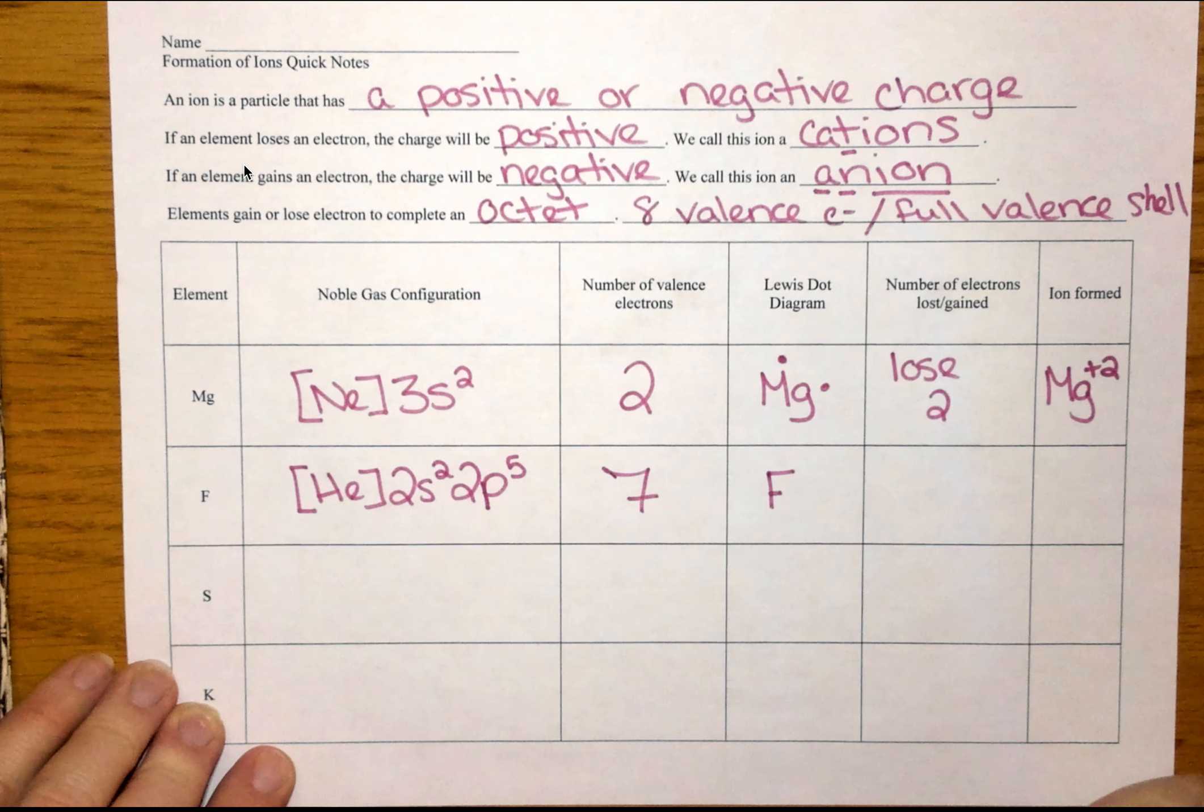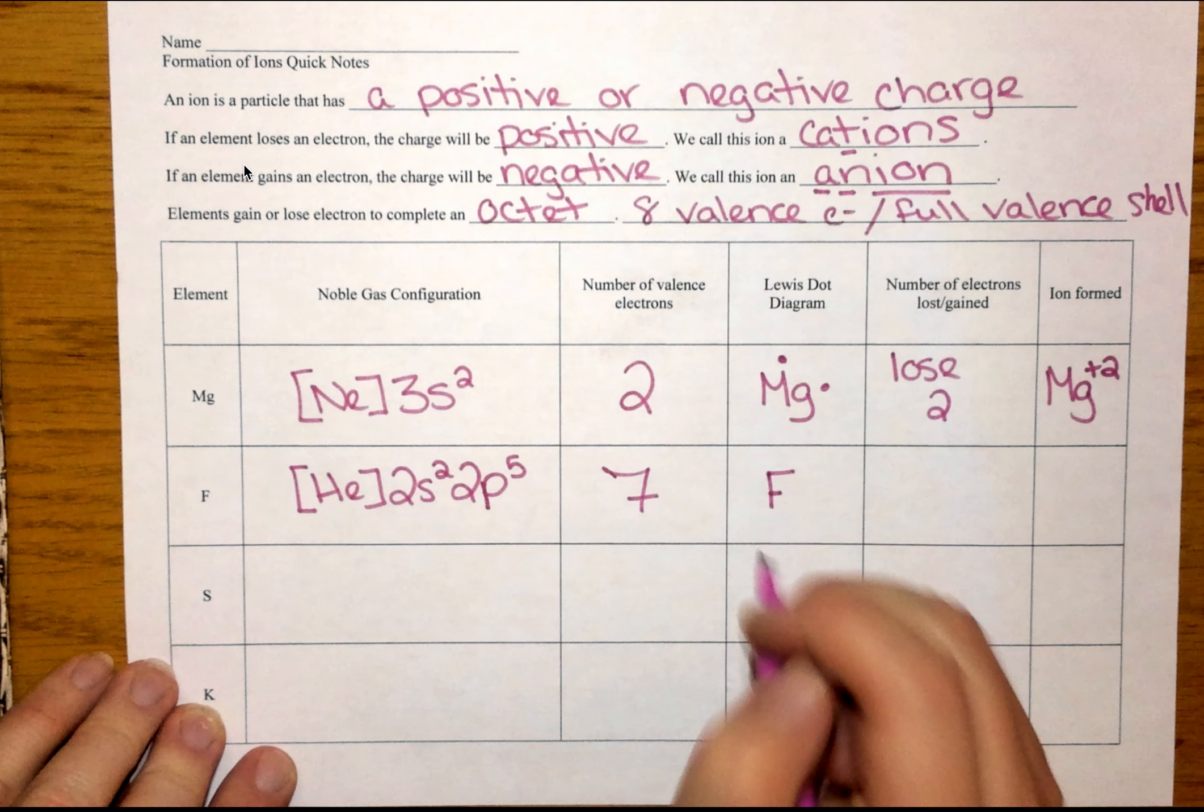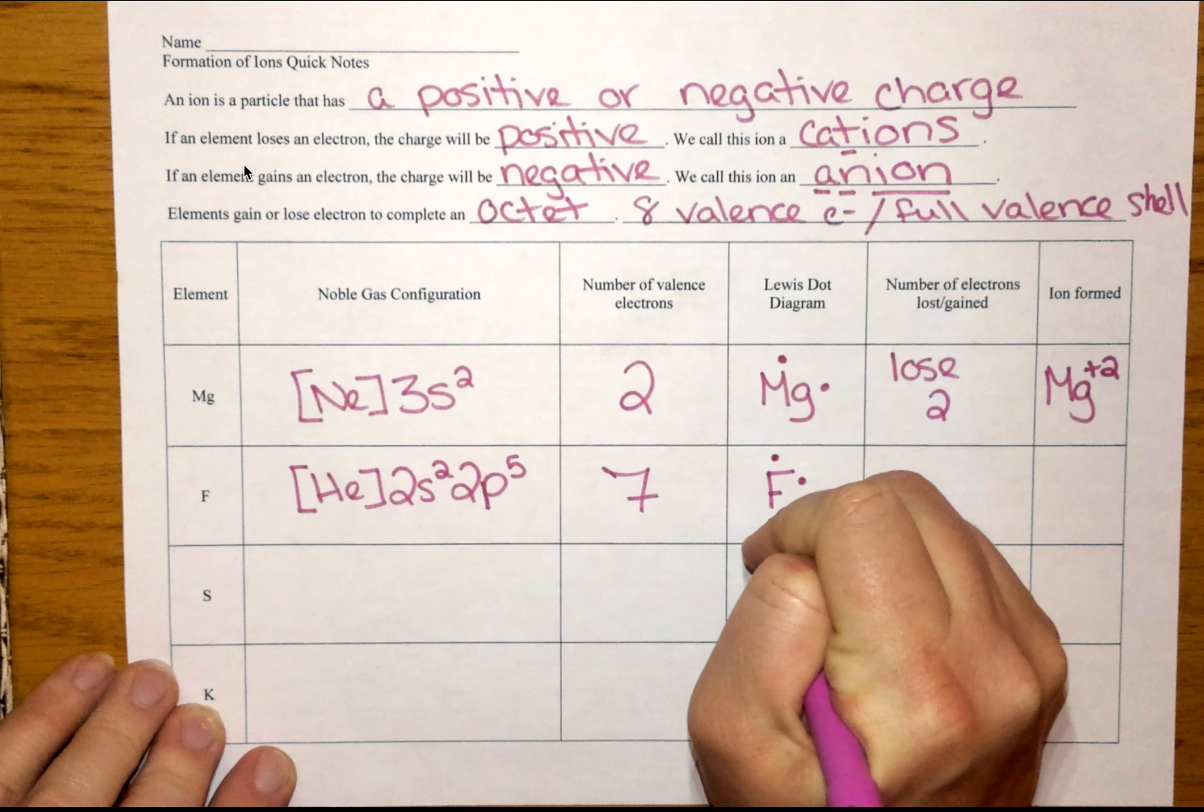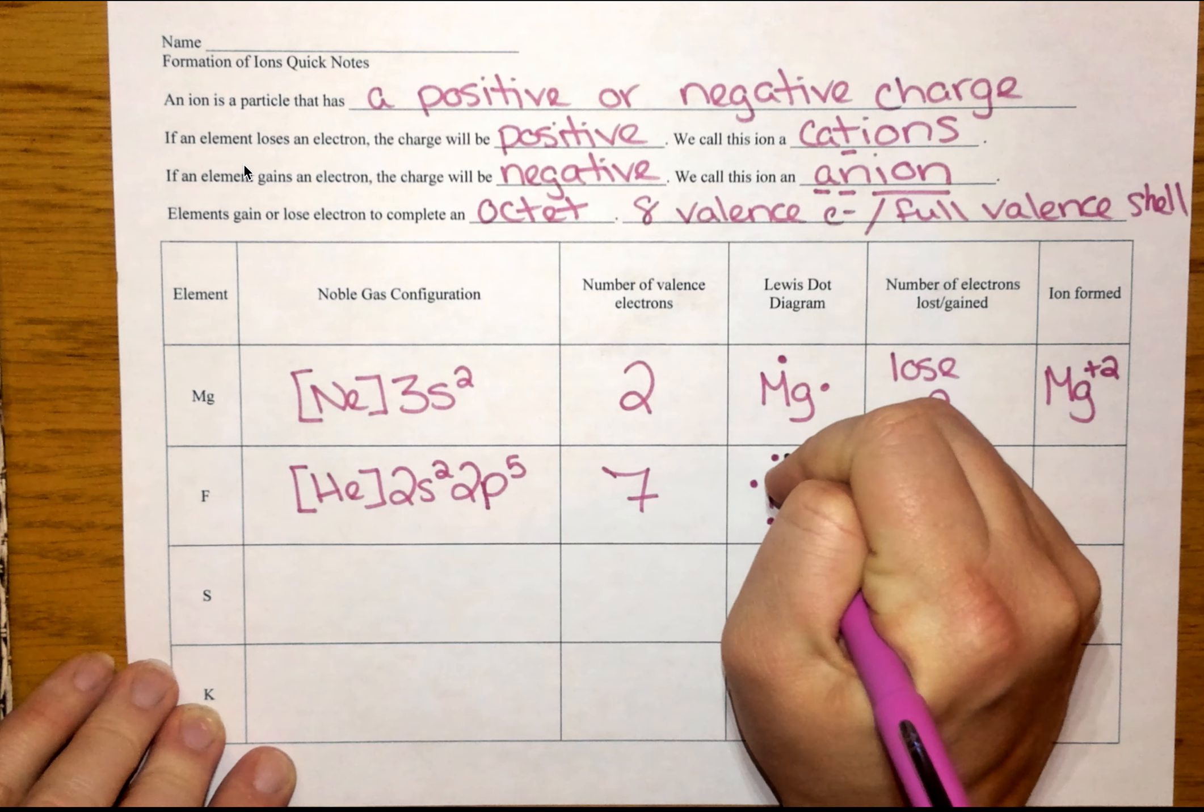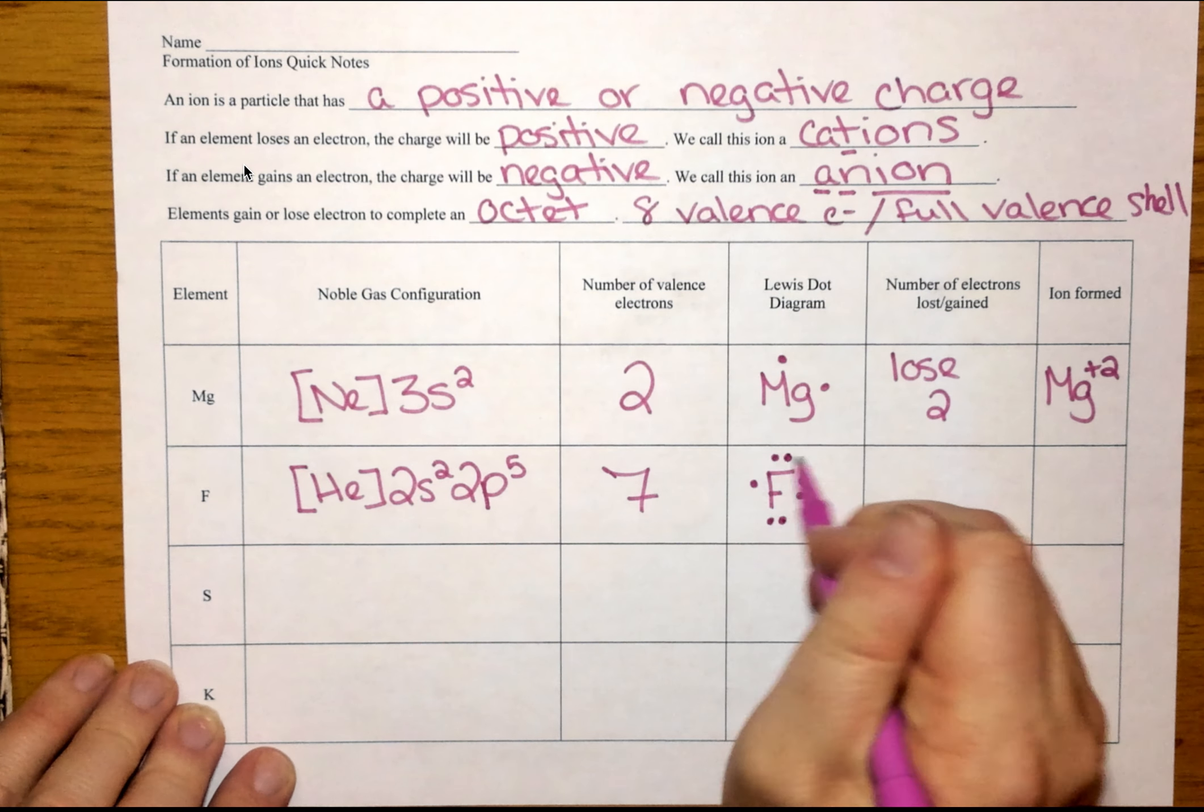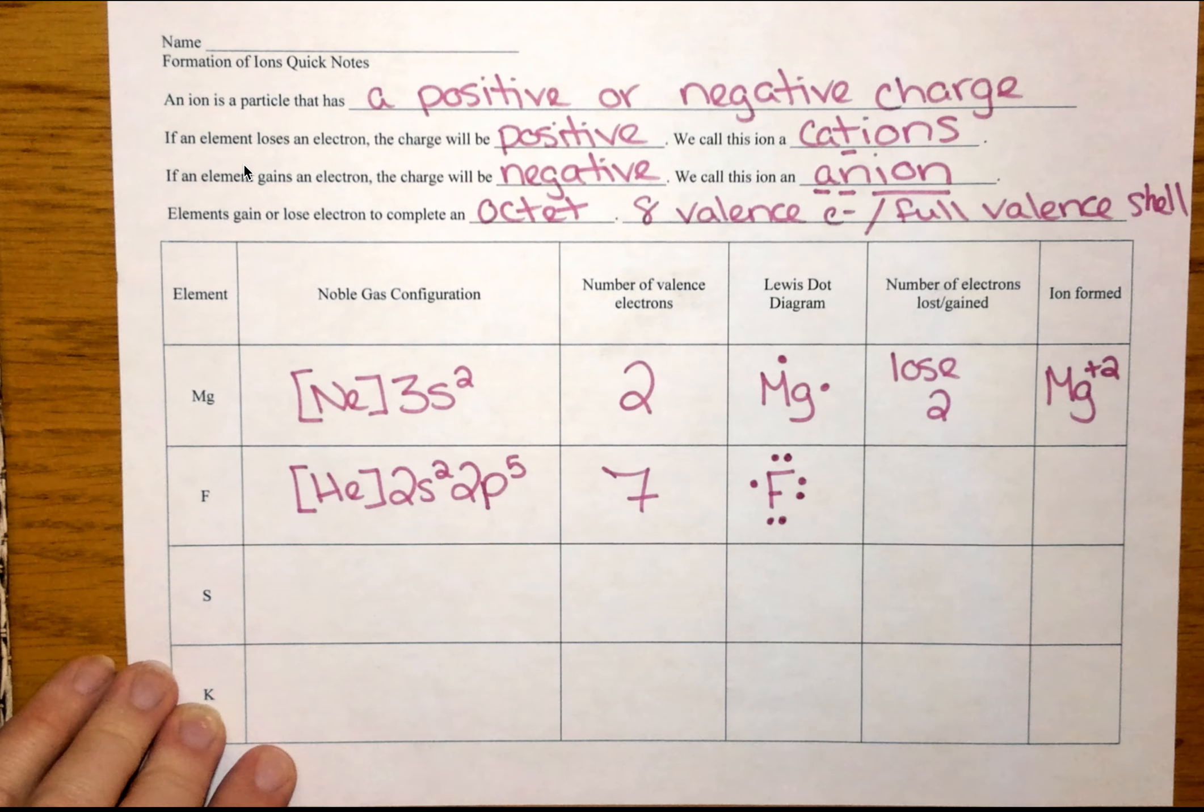Now when I go to draw my Lewis dot diagram for fluorine, it's going to be my F in the center. And then I need seven valence electrons. So we almost have an imaginary square around fluorine. And what we're going to do is we go one, two, three, four, nice and spaced out, five, six, seven. So when we do that, we want to show that we have a pair, a pair, a pair, and then one lonely electron.